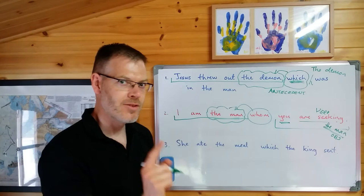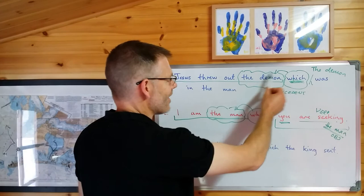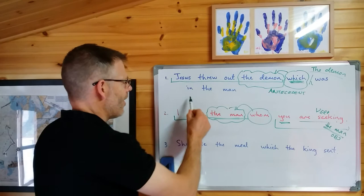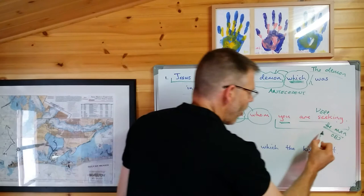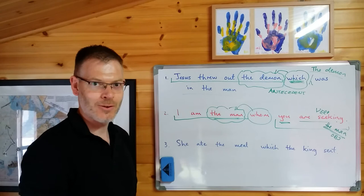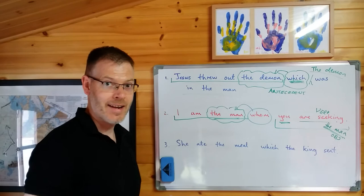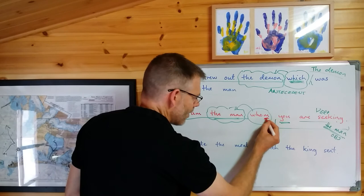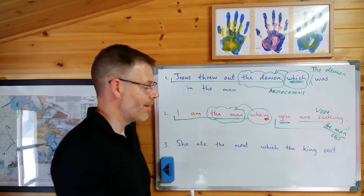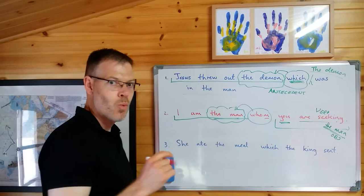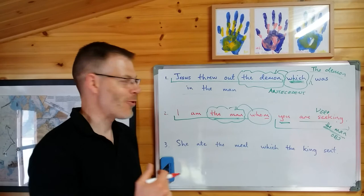Notice the contrast here. In the first example, the antecedent — the demon — became the subject of the sentence that the dependent clause came from. In the second example, the antecedent — the man — became the object of the sentence that the dependent clause was constructed from. That, incidentally, is the reason why — and here you're going to learn some English grammar — that's the reason why we say 'whom,' not 'who.' 'I am the man who you are seeking' — now, that's bad grammar. 'I am the man whom you are seeking.' Because in English, we still decline relative pronouns to distinguish subject and object.